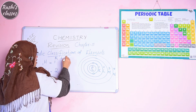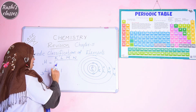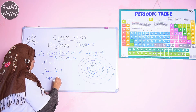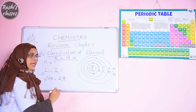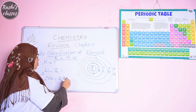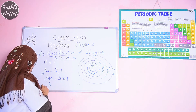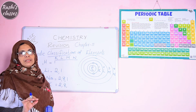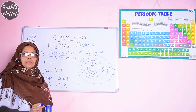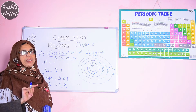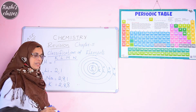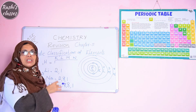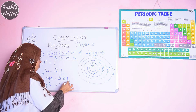Sodium has atomic number 11. The K shell takes 2, the L shell takes 8 (maximum), and the remaining 1 electron goes to the M shell — giving 2, 8, 1. Potassium has atomic number 19. Although the M shell can accommodate 18 electrons, the outermost shell can hold only 8. So M shell here takes 8, and the last electron goes to the N shell — giving 2, 8, 8, 1. We can see that in the first group, the outermost shell always contains 1 electron, which is called the valence electron.